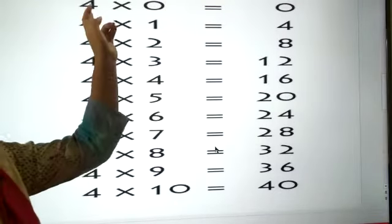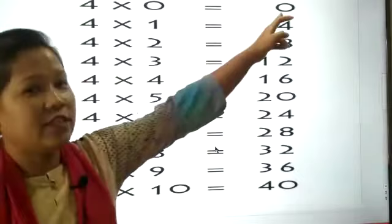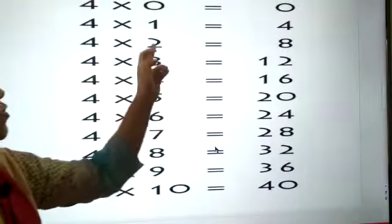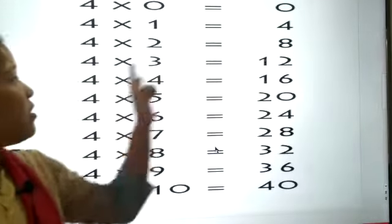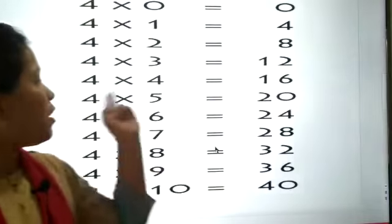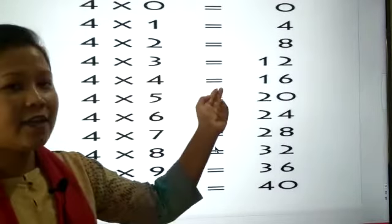Now look at here. 4 0s are 0, 4 1s are 4, 4 2s are 8, 4 3s are 12, 4 4s are 16.